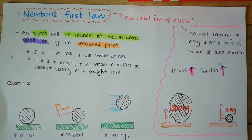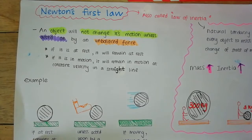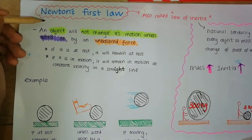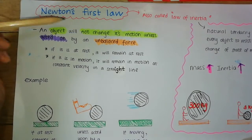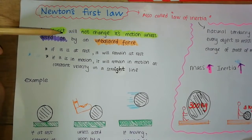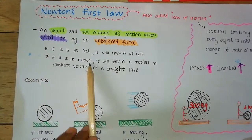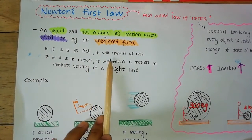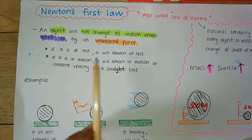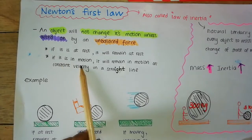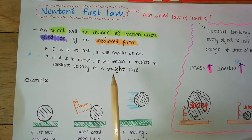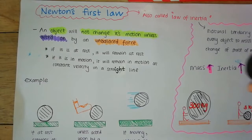When we talk about Newton's first law, it states that an object will not change its motion unless acted upon by an unbalanced force. If it is at rest it will remain at rest. If it is in motion it will remain in motion at constant velocity in a straight line.